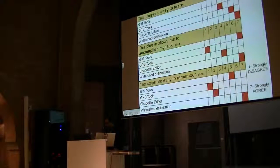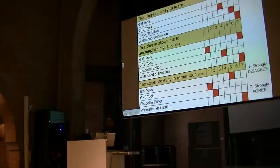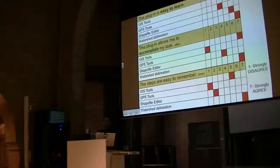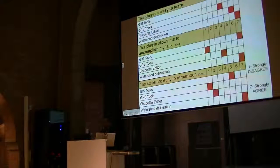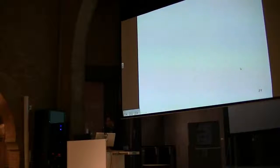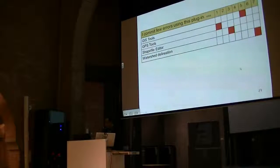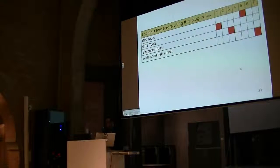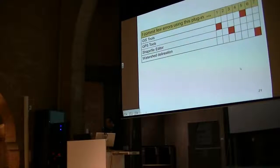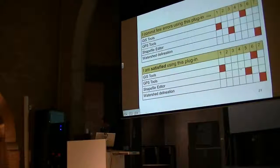It was really difficult with shape file editor because in version 4.7, going back or undoing what you did was not very user-friendly. And when working with the table editor — editing points and updating attributes — that was very slow. In terms of reliability, the statement was 'I commit few errors using this plugin' — higher scores again for watershed delineation and GIS tools, lower for GPS tools. For satisfaction, higher scores for watershed delineation, lowest for GPS tools. Watershed delineation scores very high because you only need one or two clicks and you get an automated delineation of your boundaries.